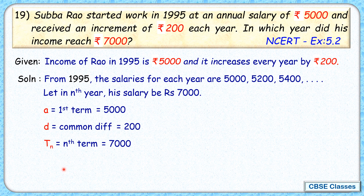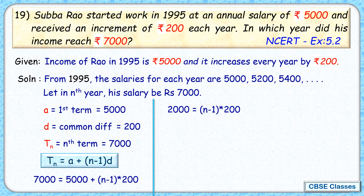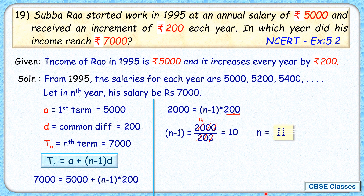To solve it, we use the formula TN = A + (N − 1)D. Putting in the values: 7,000 = 5,000 + (N − 1) × 200. Shifting 5,000 to the LHS gives 2,000 = (N − 1) × 200. Dividing both sides by 200, the zeros cancel and we get N − 1 = 10, so N = 11.